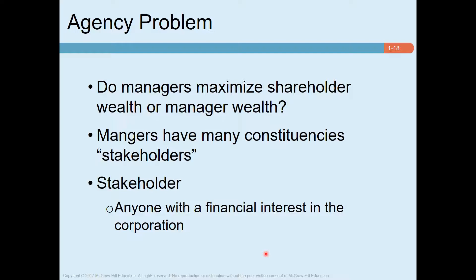Sometimes managers may pursue their own goals rather than pursuing shareholders' goals. For example, managers may schedule businesses in a luxury resort, or managers may buy corporate jets. That means they may be taking decisions that are not in the best interest of the shareholders. In such a case, a problem arises where shareholders and managers are not doing what they are expected to do.